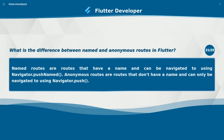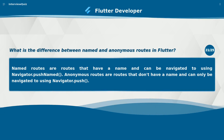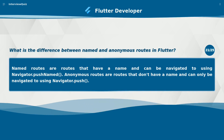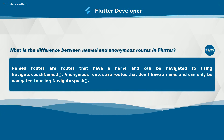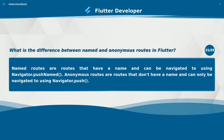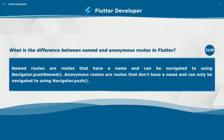What is the difference between named and anonymous routes in Flutter? Named routes are routes that have a name and can be navigated to using Navigator.pushNamed.